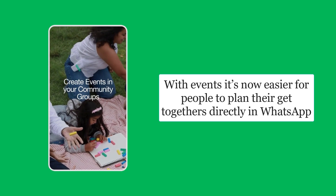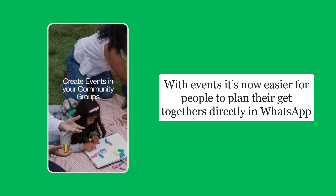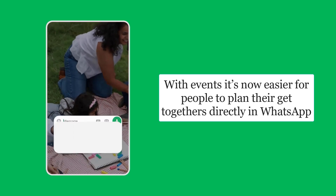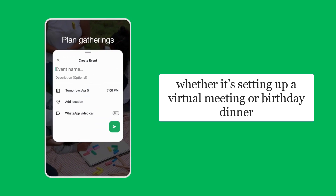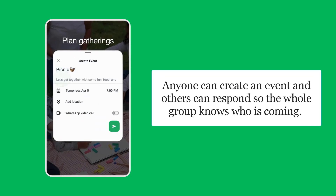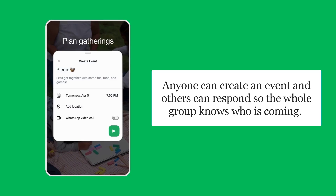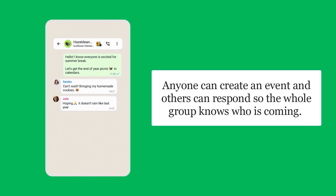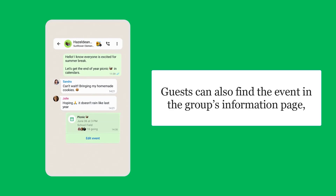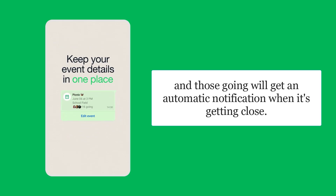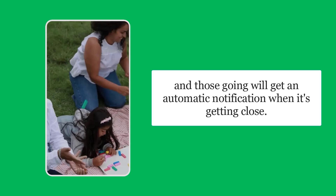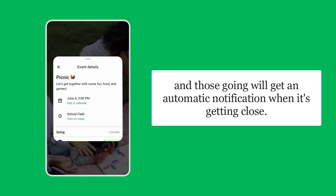With events, it's now easier for people to plan their get-togethers directly in WhatsApp. Whether it's setting up a virtual meeting or birthday dinner, anyone can create an event and others can respond so the whole group knows who is coming. Guests can also find the event in the group's information page, and those going will get an automatic notification when it's getting close.